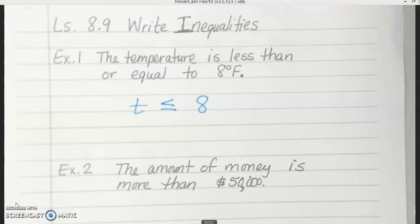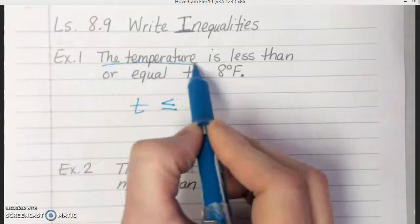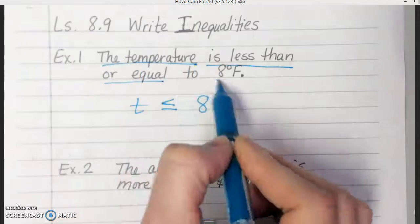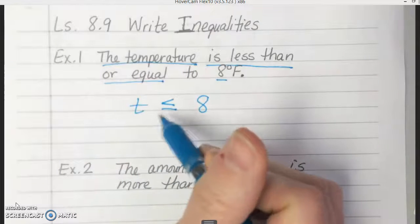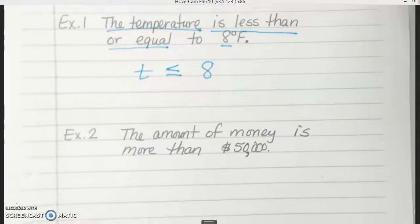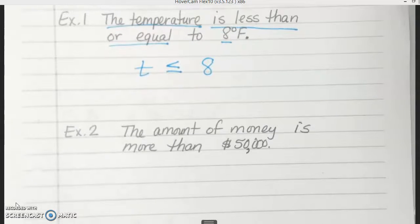Any questions on how to write that one? You just break down what it says here. So see how we have the temperature is less than or equal and then there's your 8. So temperature is less than or equal to 8. You could use any letter. I mean it really doesn't matter. It's just T for temperature makes sense.